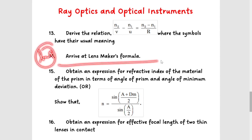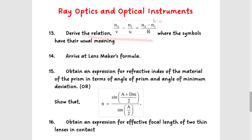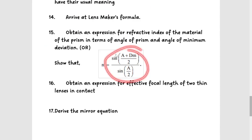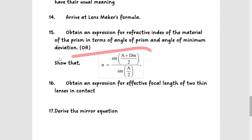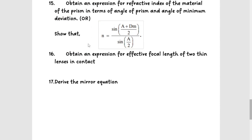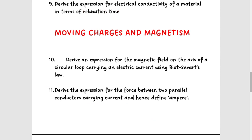For ray optics, the most important derivation is the lens maker's formula — derive the lens maker formula, which involves ray diagrams. Next, derive the relation where symbols have their usual meaning. Then, obtain the expression for refractive index of the material of a prism in terms of angle of prism and angle of minimum deviation. Finally, the sixteenth derivation: obtain the expression for effective focal length of two thin lenses in contact. This one is not the most critical, but it is included to be on the safer side. These complete the 16 derivations.